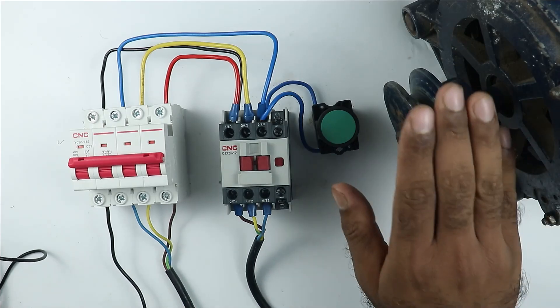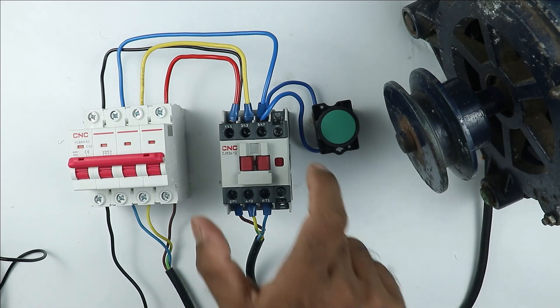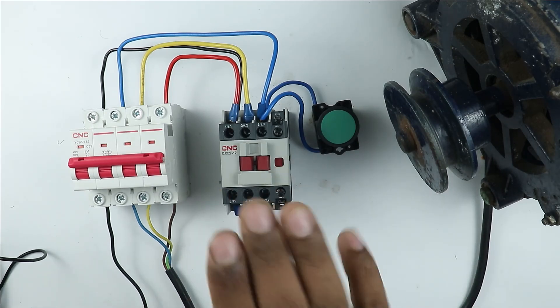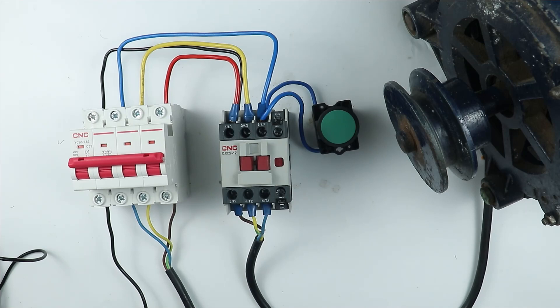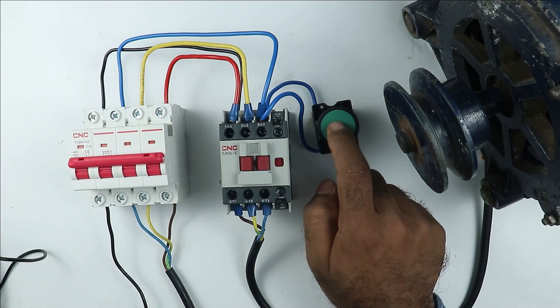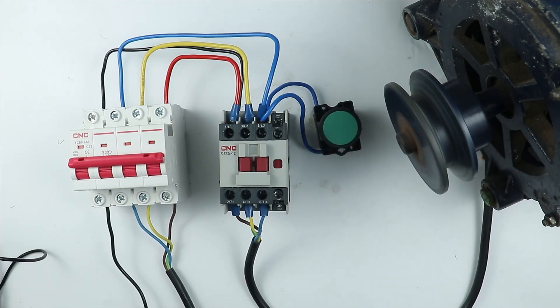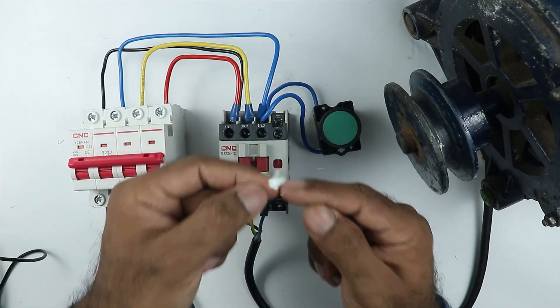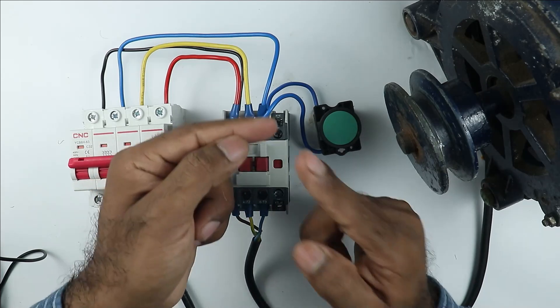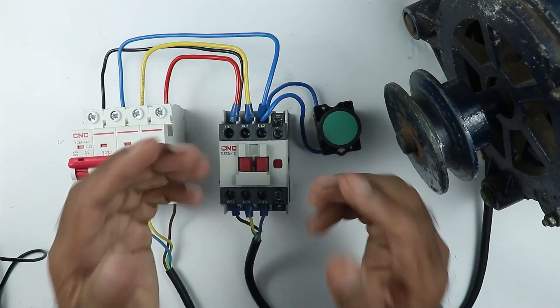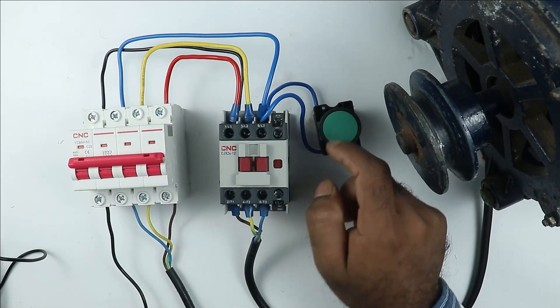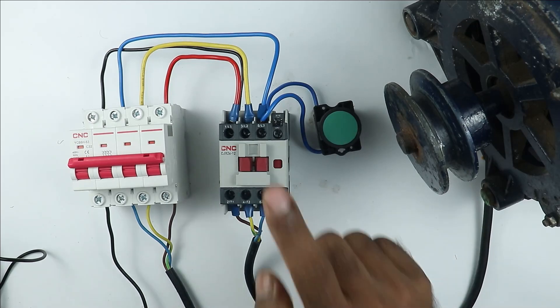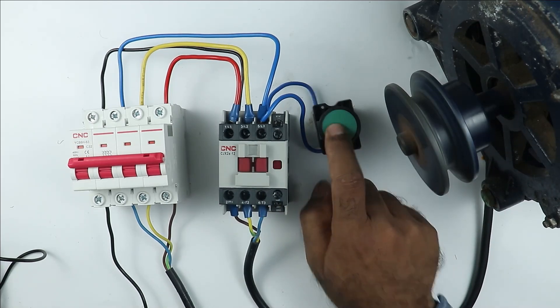To turn on and off a motor or any other load, contactor is used. Contactor is used here because the contact in contactor, like if I turn on this contactor then a little sparking is generated inside. Whenever there is a contact in electrical circuit a sparking is generated. So to reduce this sparking and along with this to turn on and off heavy loads from a distance this type of contactor is used.